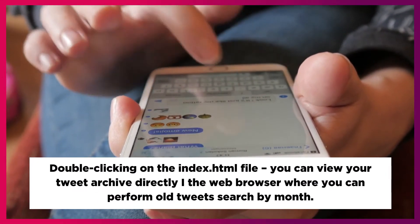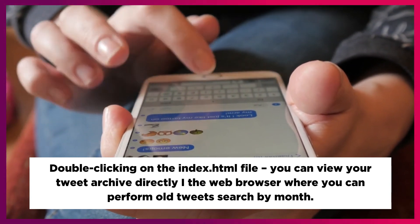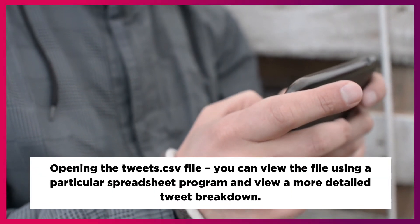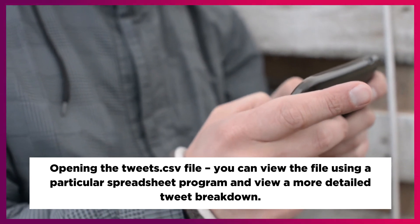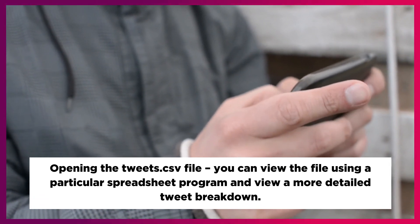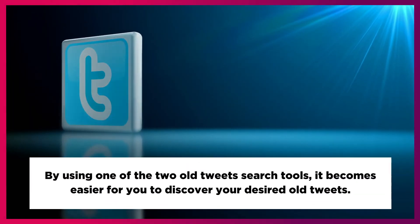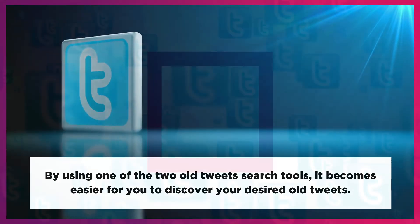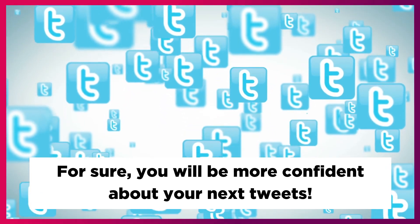Double-clicking on the index.html file, you can view your tweet archive directly in the web browser where you can perform old tweets search by month. Opening the tweets.csv file, you can view the file using a spreadsheet program and view a more detailed tweet breakdown. By using one of these two old tweets search tools, it becomes easier to discover your desired old tweets. For sure, you will be more confident about your next tweets.